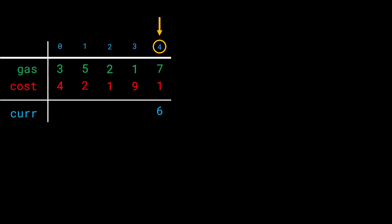We start from station 4 and once we reach station 0 we still have 6 units of gas remaining. At station 0 we fill up with 3 more units, bringing us to 9, then we spend 4 units to travel to the next station. So 6 + 3 - 4 gives us 5 units — at station 0 we have 5 units in our tank.